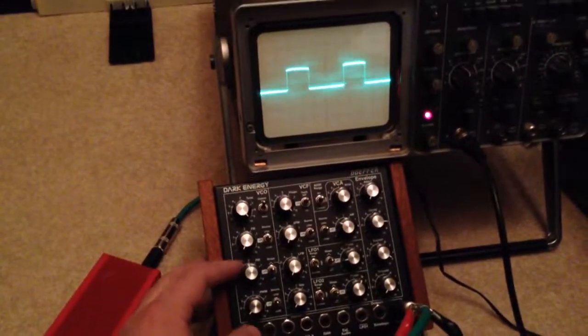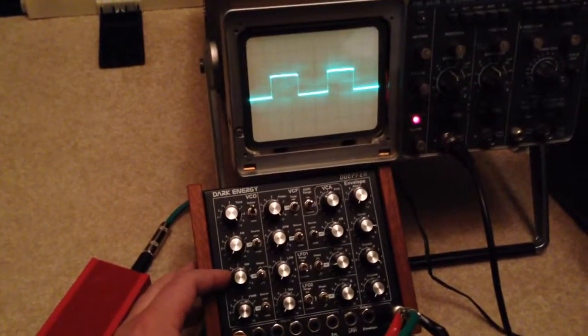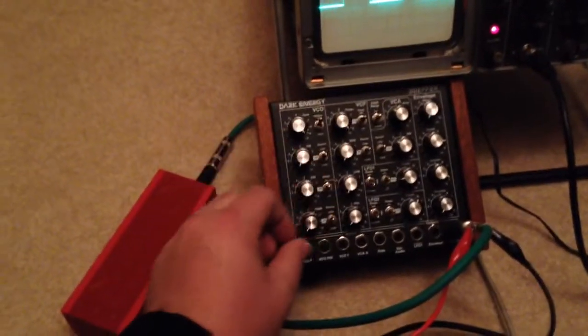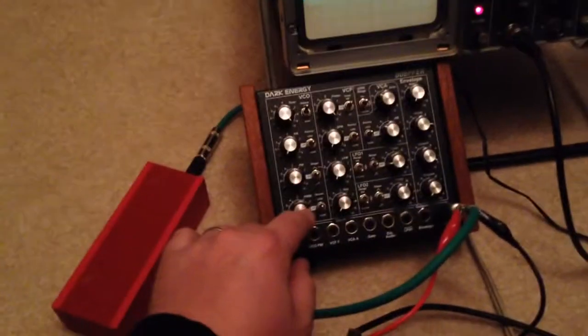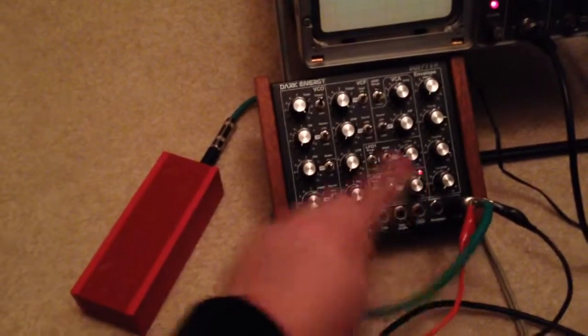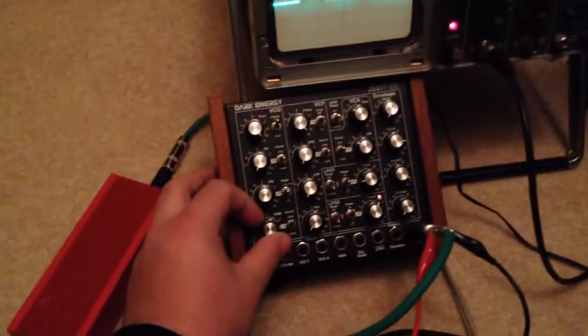So, let's get that square wave going again. And now, let's add some pulse width modulation. Let's do that from LFO 2. I'm going to do triangle pulse width modulation. Here we go.